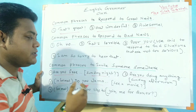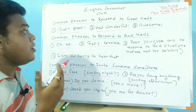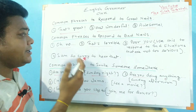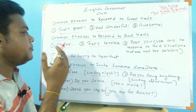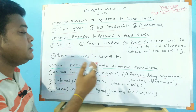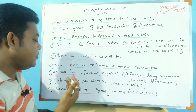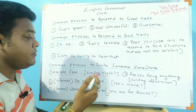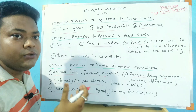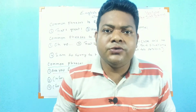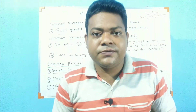To summarize: the first category is common phrases to respond to great news — 'that's great,' 'how wonderful,' 'awesome.' The second is common phrases to respond to bad news — 'oh no,' 'that's terrible,' 'poor you' for situations that are not too serious, and 'I am so sorry to hear that.' The third category is common phrases to invite someone somewhere — 'are you free Sunday night?', 'are you doing anything?', 'do you want to see a movie?' (informal), and 'would you like to join me for dinner?' (formal). If you practice these phrases several times, your English speaking skill will improve day by day. In this class I have discussed about some common used phrases in our daily life conversation, part 5. If you like this class, please subscribe to my channel and share with your friends. Thank you very much for watching this video.